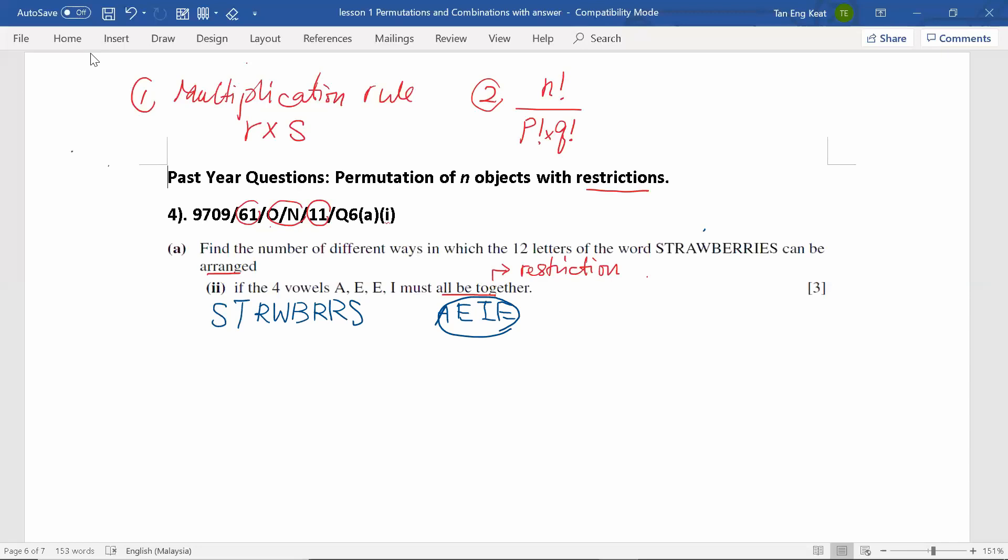Now, we count the number of effective letters now. One, two, three, four, five, six, seven, eight, nine. Hence, effectively, there are nine objects being arranged, nine factorial ways.